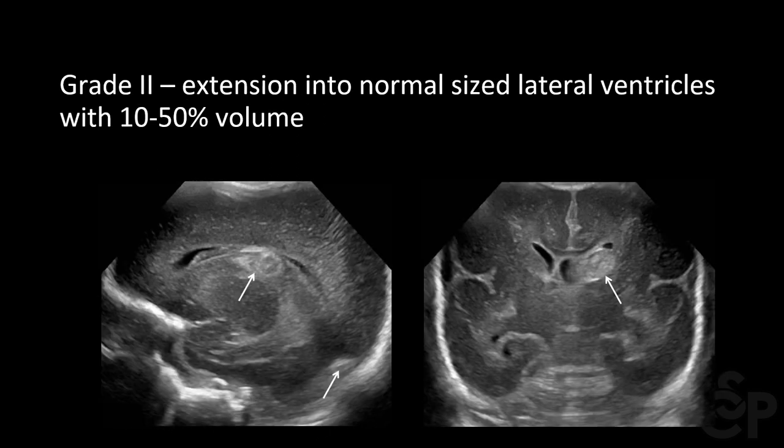Grade 2 is defined as hemorrhage with extension into normal-sized lateral ventricles, occupying 10 to 50% of the ventricular volume. The sagittal view on the left shows — as indicated by the white arrow at the bottom — that the hemorrhage is also layering in the occipital horn.